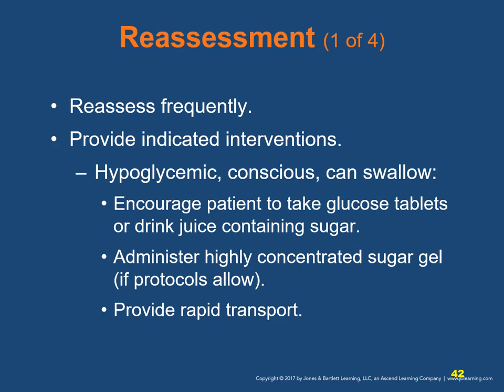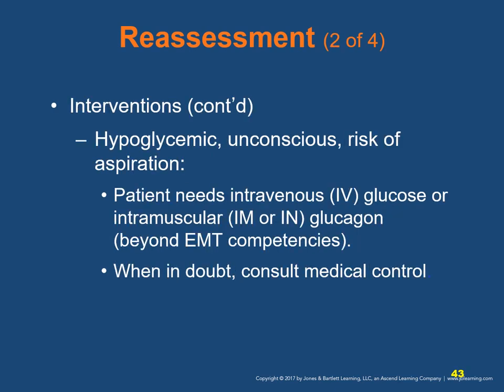For hypoglycemic patients who are conscious and can swallow without risk of aspiration, encourage glucose tablets or juice containing sugar, and administer gel preparation or sugar drink if local protocol permits. Provide rapid transport. For unconscious hypoglycemic patients or those at risk of aspiration, IV glucose (dextrose) or IM/intranasal glucagon is needed, which most EMTs are not permitted to give — AEMTs and paramedics can provide this. If in doubt whether the patient has hyperglycemia or hypoglycemia, most protocols err on the side of giving glucose; when in doubt, consult medical control.